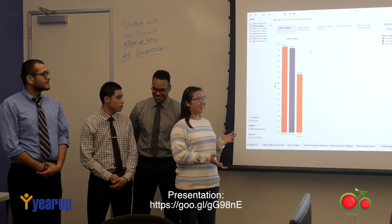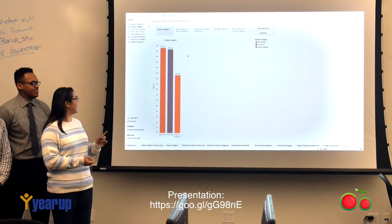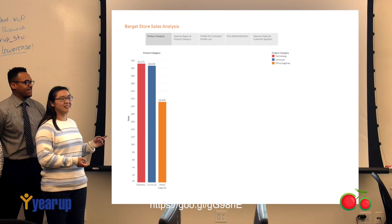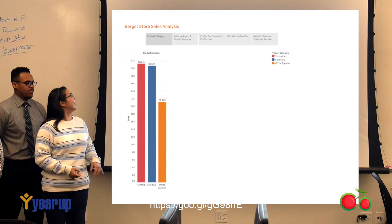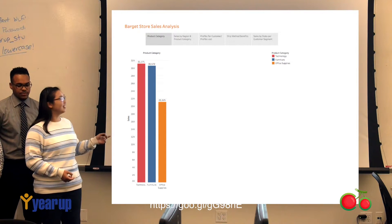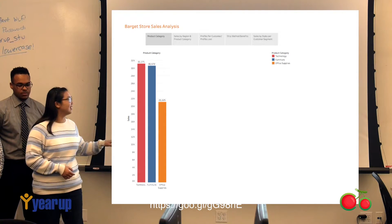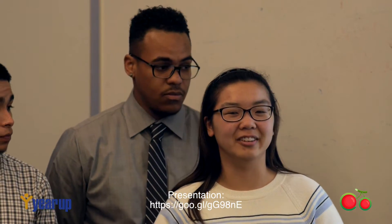Here's a bar graph comparing product categories: technology, furniture, and office supplies. The greatest category sale is technology, and the worst is office supply. Later on we'll be going into detail about ways to improve sales.